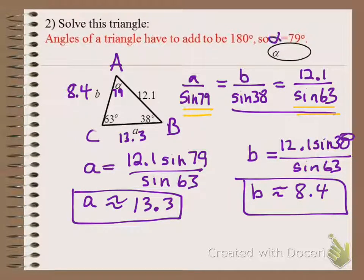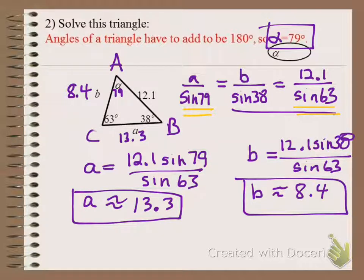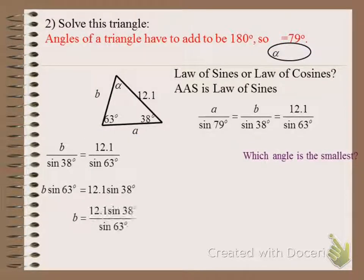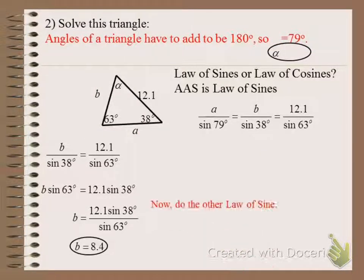The three missing pieces of the triangle are now found. The largest side is across from the largest angle, and the smallest side is across from the smallest angle — the triangle is solved. Do you remember this from geometry or algebra 2?